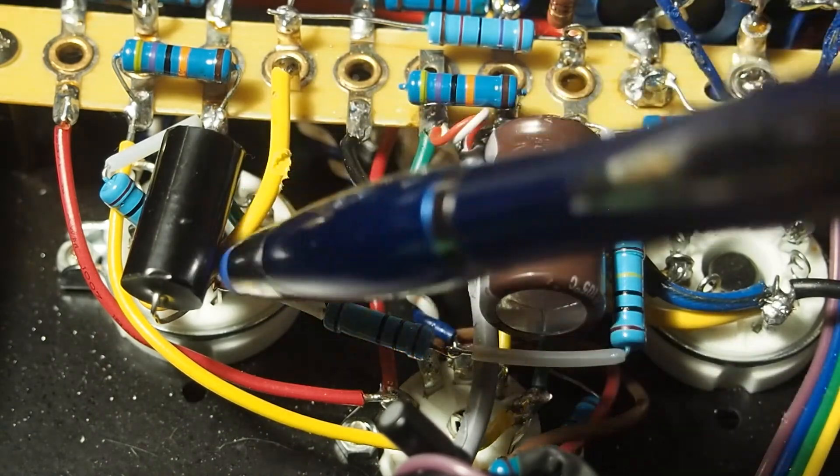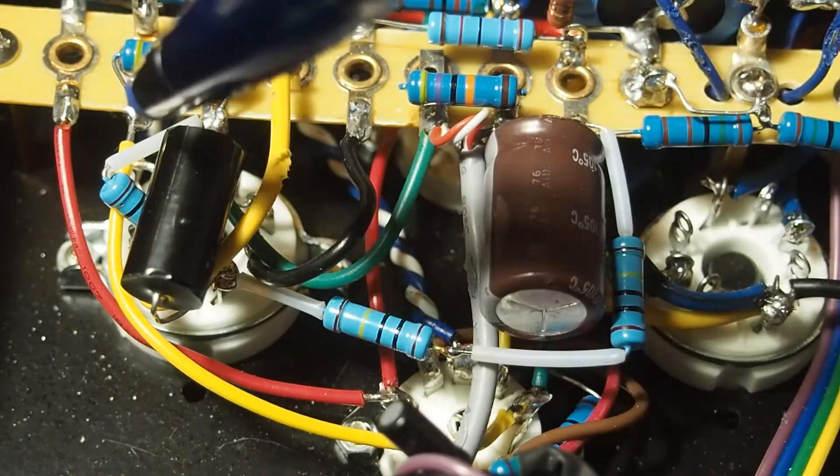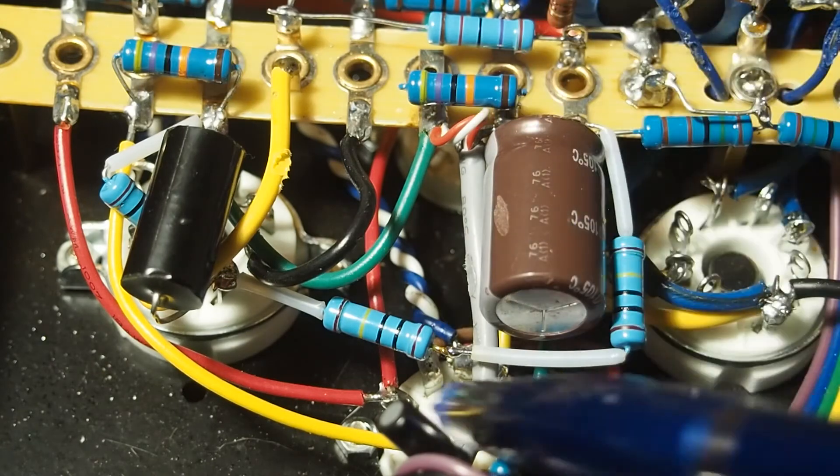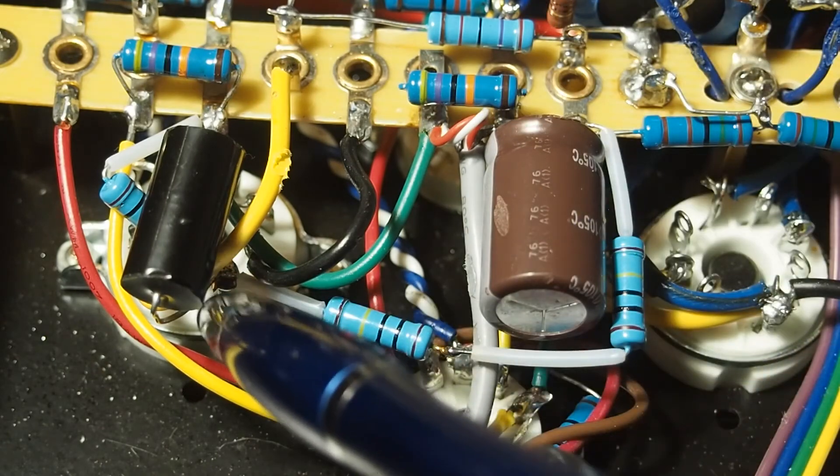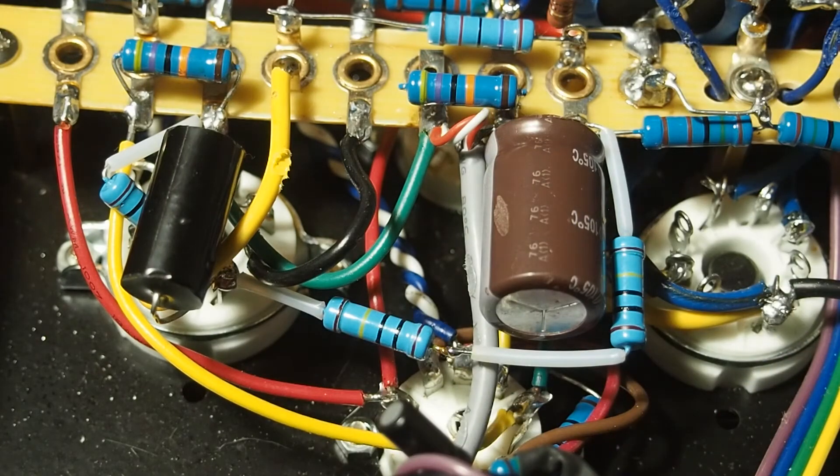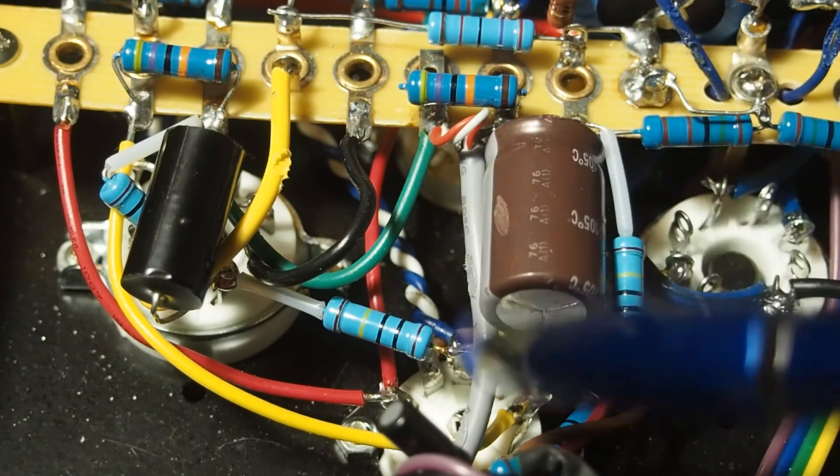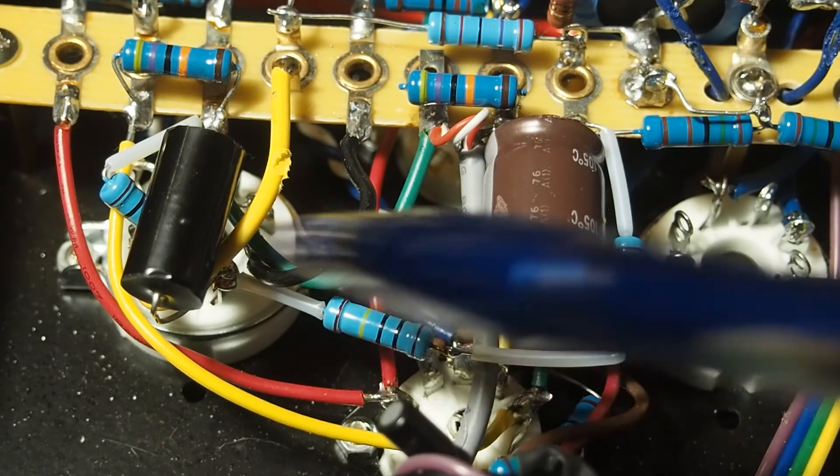And this sets up a voltage divider to set the bias on the grid of the upper section to a fixed value instead of floating with the signal.